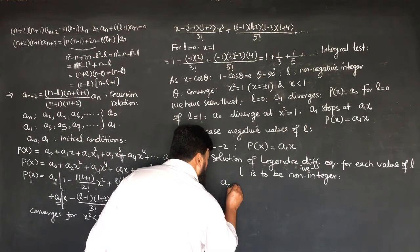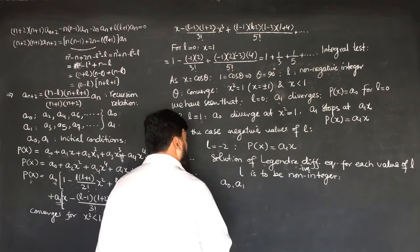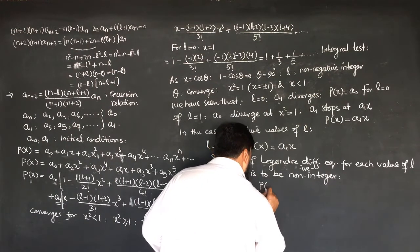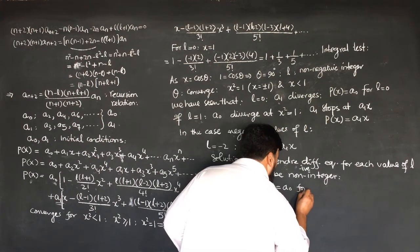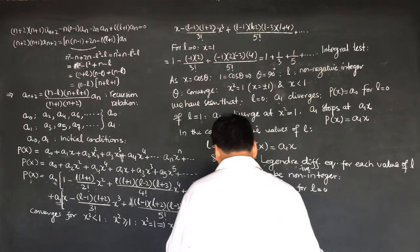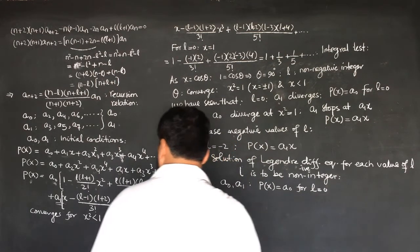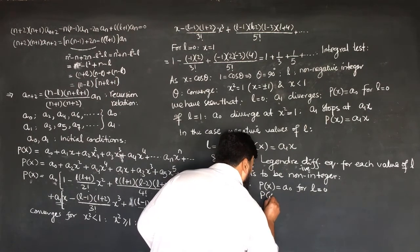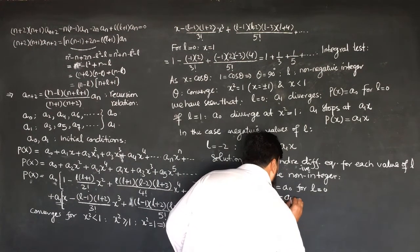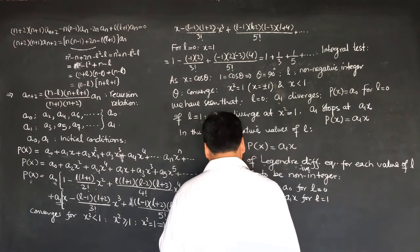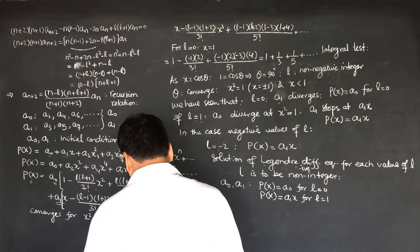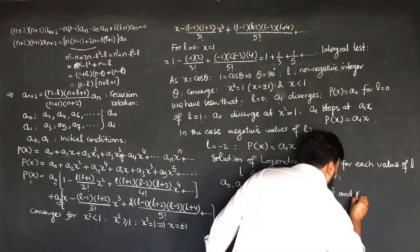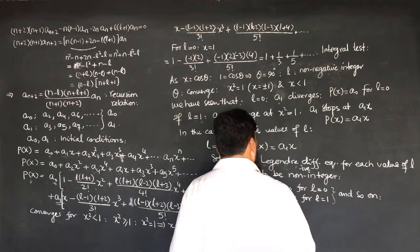As a summary: we have the solution with even coefficients containing a_0 and odd coefficients containing a_1. P(x) equals A_0 for l equal to 0, and P(x) equals A_1·x for l equal to 1, with the rest of the series vanishing, and so on for other values of L.